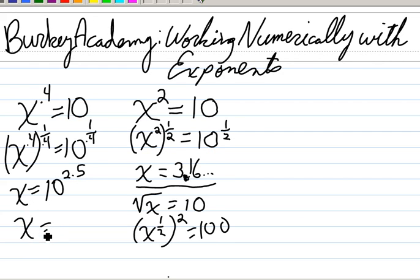And raise 10 x to the y 2.5 power. And x is going to be 316 point, and we'll call it 2.3 here, approximately. So this works no matter how ugly this exponent is. Raise both sides to the 1 over that exponent to get rid of it.